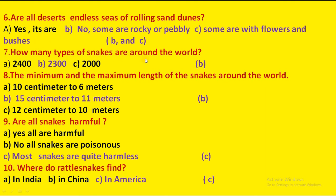How many types of snakes are around the world? The minimum and maximum length of snakes around the world — Option B is correct. Are all snakes harmful? Kya sabhii snakes harmful hote hain? Options: yes, all are harmful; no, all snakes are poisonous; most snakes are quite harmless. Option C is correct.